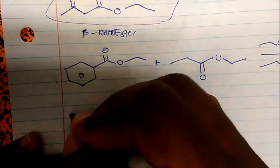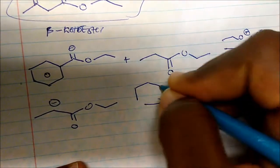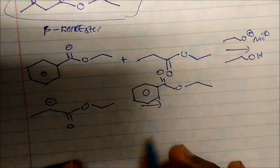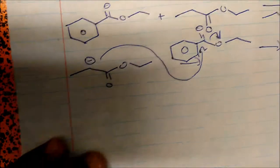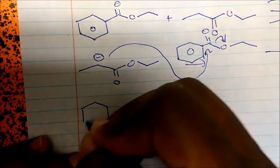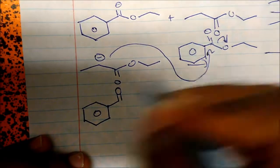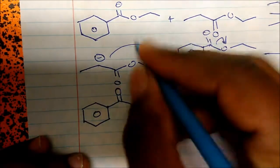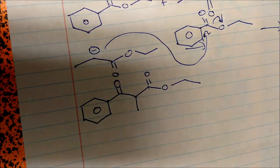So if that is true, then we get deprotonation on this one. We still have the molecule with the ketone and the ester. This will come in, attack, and displace ethoxide as a leaving group. So when that happens, what do we form? Here's my benzene ring, and here's my ketone. This ketone is bonded to this carbon, which has this R group. But this carbon also has this ester group. So this would be the product that will form.